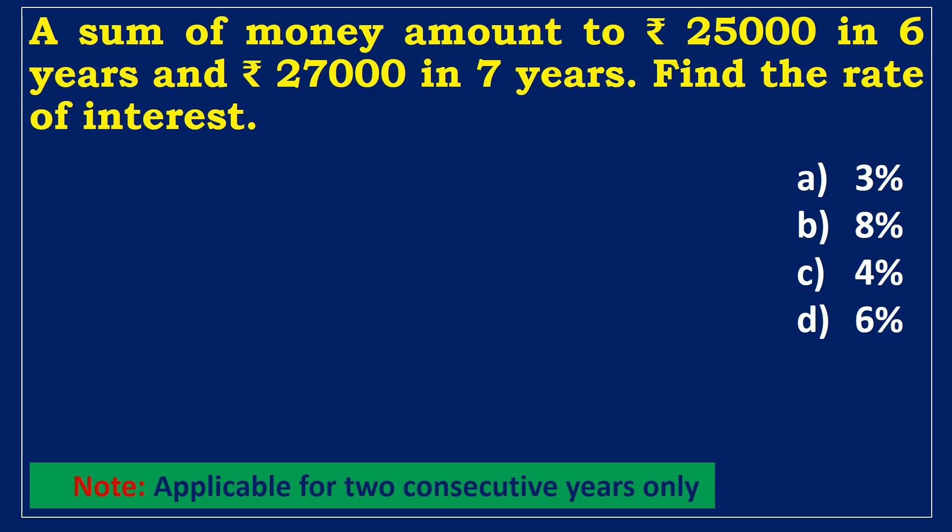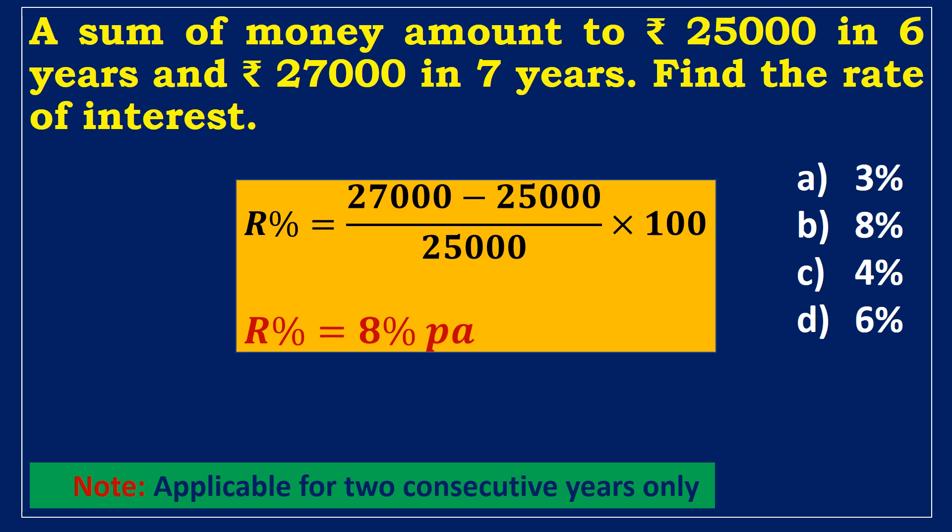Second example: A sum of money amounts to 25,000 rupees in 6 years and 27,000 rupees in 7 years. Find the rate of interest. Since the years are consecutive, using the percentage change formula: rate = (27,000 − 25,000) / 25,000 × 100. The rate of interest is 8% per annum.